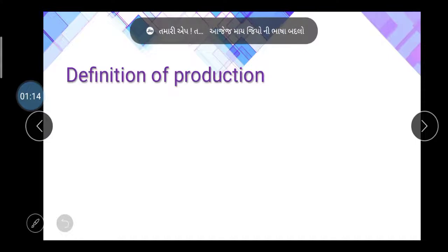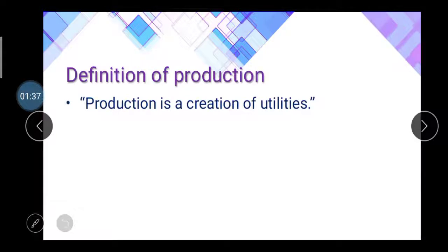Let's start with the introduction to theory of production. The first topic is the definition of production. Whenever a company or factory performs production activity, they convert raw material to finished goods. The process of converting raw materials to finished goods is called production. The definition of production is: production is a creation of utility. This definition is given by Alfred Marshall.